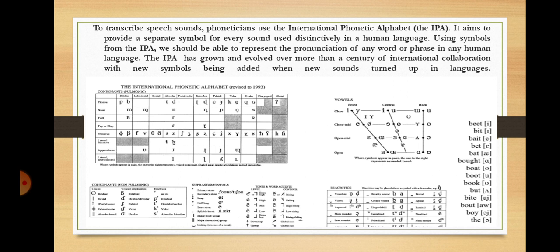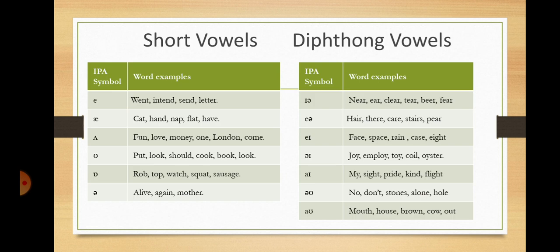Here you can see the general scheme of the International Phonetic Alphabet for the English language. And here you can see in more detail the IPA symbols with word examples for the short vowels, and the IPA symbols and word examples for the diphthong vowels.